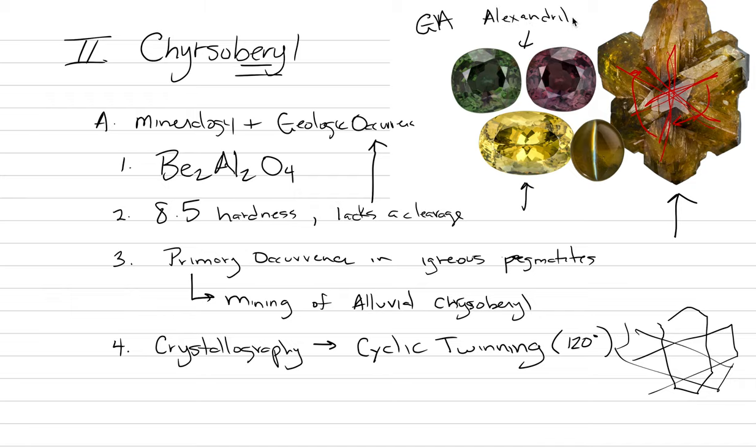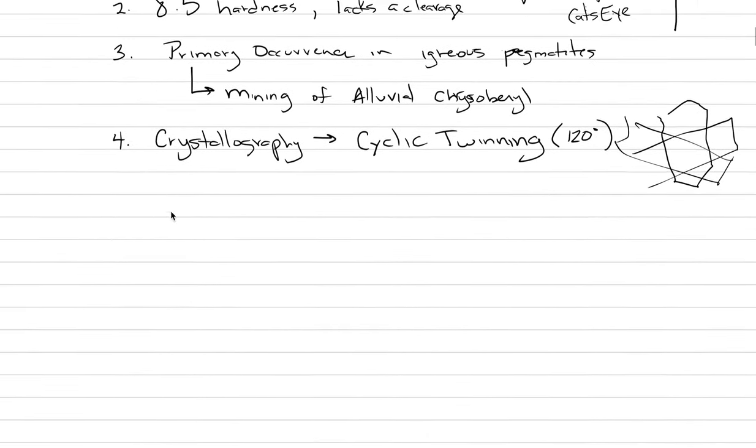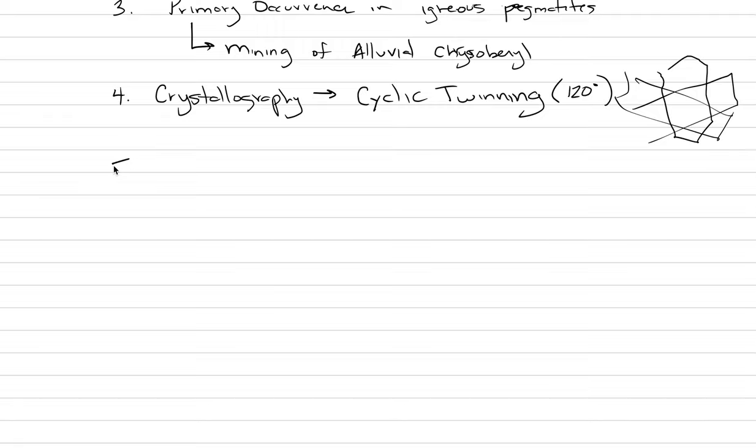Alexandrite has a color change. We'll show you some more of that later, where in incandescent light it's red and in daylight and fluorescent light it is green. There's another very expensive type of chrysoberyl called cat's eye. Cat's eye quartz is another type of cat's eye, but that's not the type that has any value at all relative to cat's eye chrysoberyl.